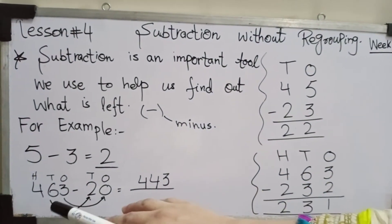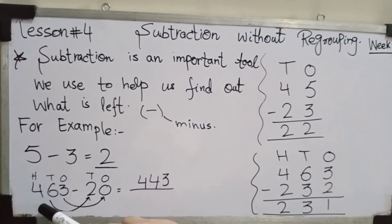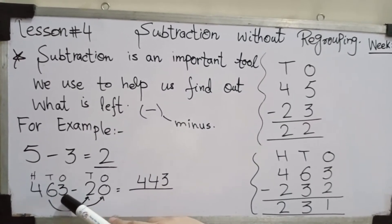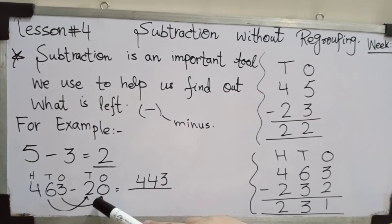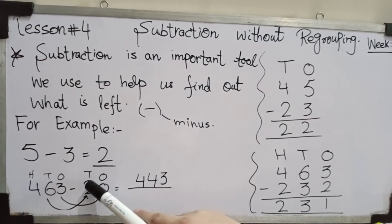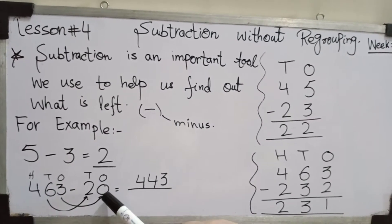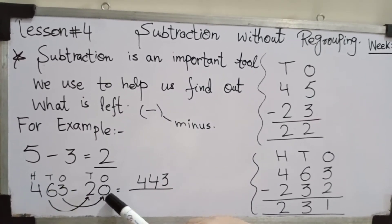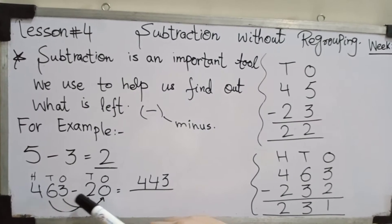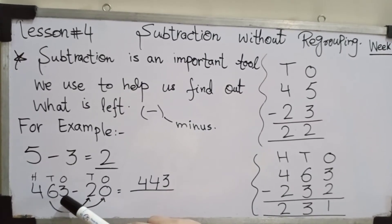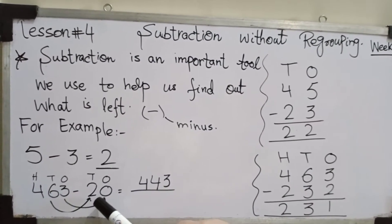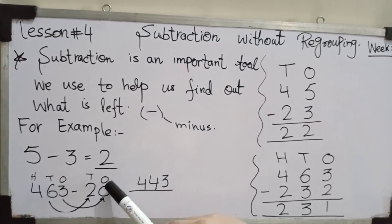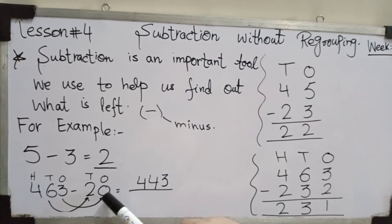Next، آپ کے پاس horizontal form میں ایک question ہے جو کہ 3 digits آپ کو نظر آ رہے ہیں — hundreds, tens and ones place۔ Then آپ نے 20 کو subtract کرنا ہے۔ Easy way یہ ہوتا ہے کہ آپ ones کو ones میں سے subtract کر لیں اور tens کو tens میں سے subtract کر لیں۔ First، ones place کو solve کریں — 3 میں سے 0 minus کرنا ہے۔